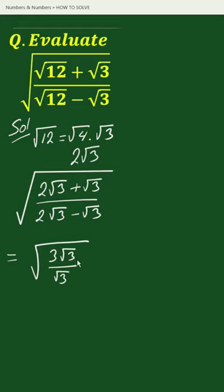Here, √3 in the numerator and √3 in the denominator cancel each other — once each. This equals the square root of 3, which is our solution.